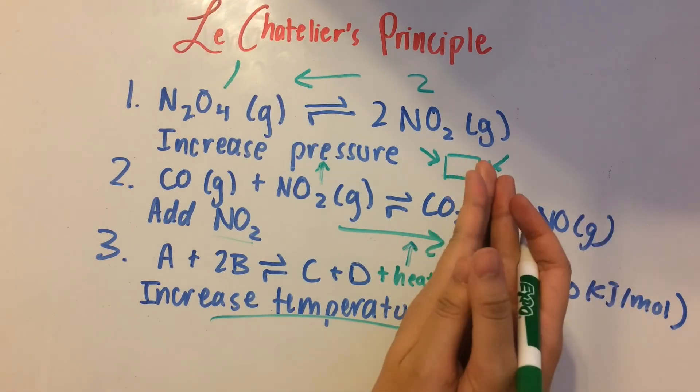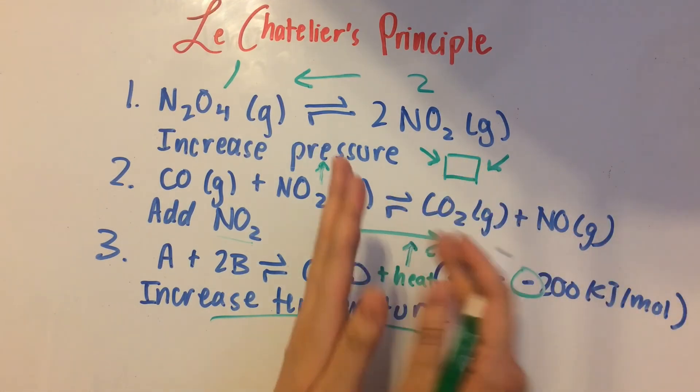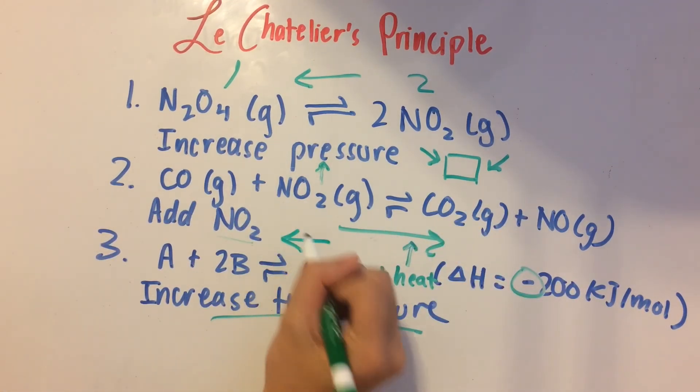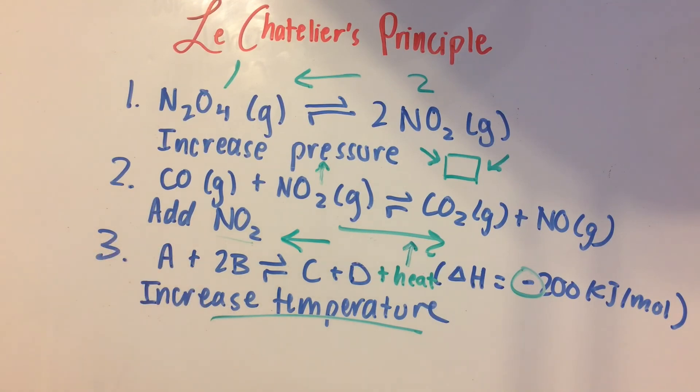When we increase it, it's on the right. So we have too many products now, and now we have to go back to the left. So it's going to shift left and favor the reactant side.